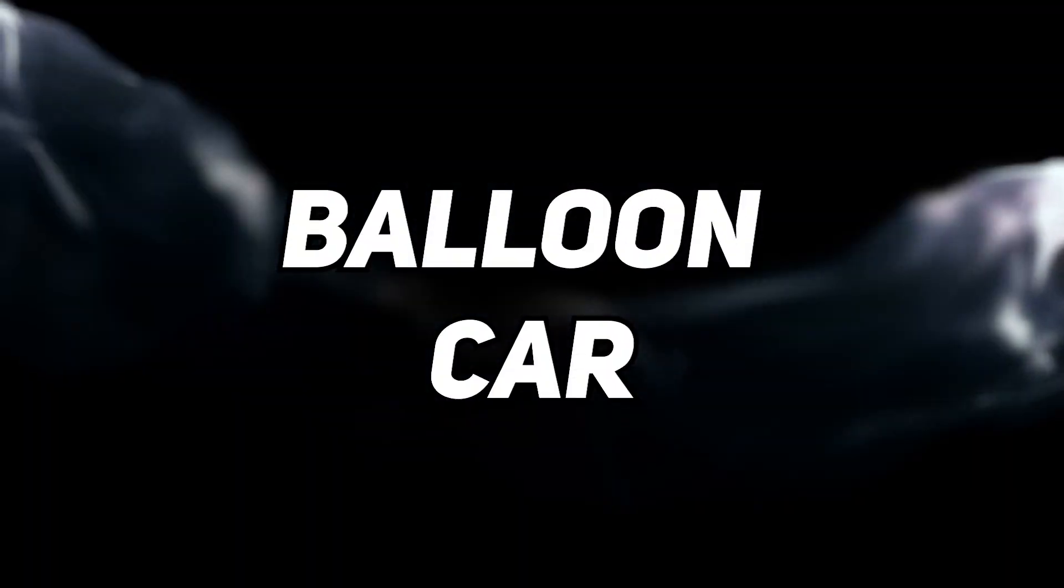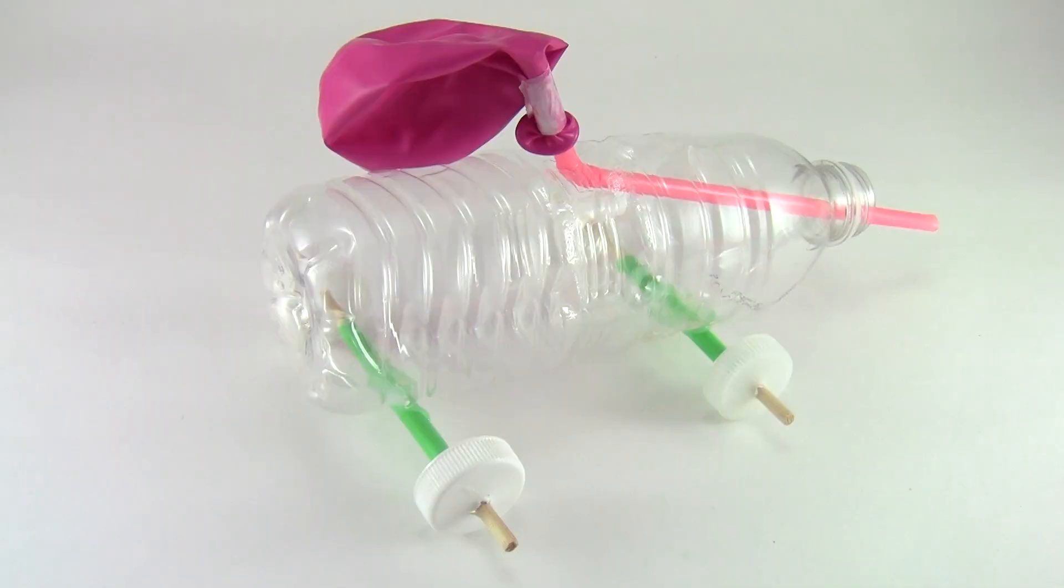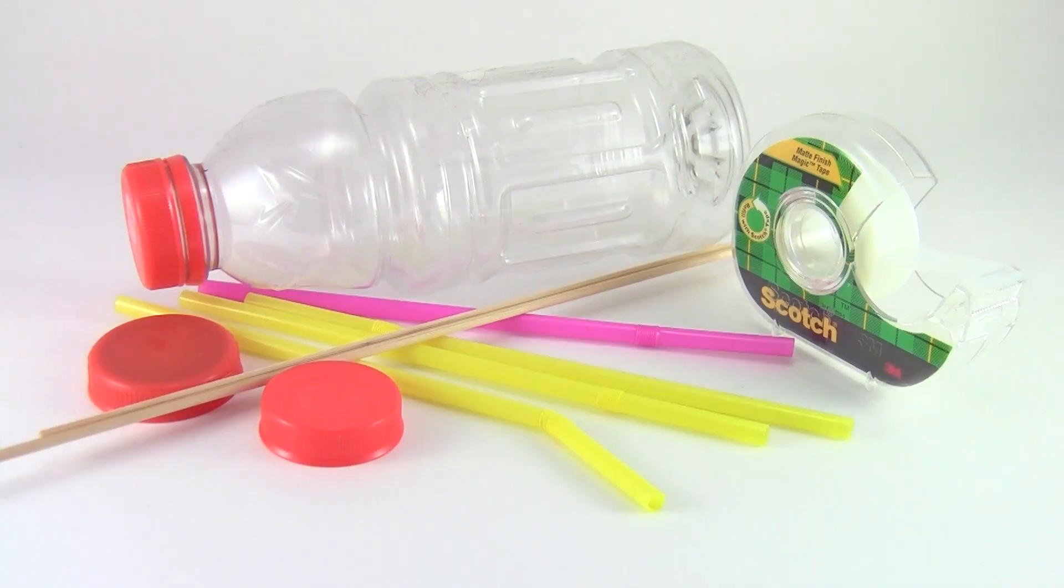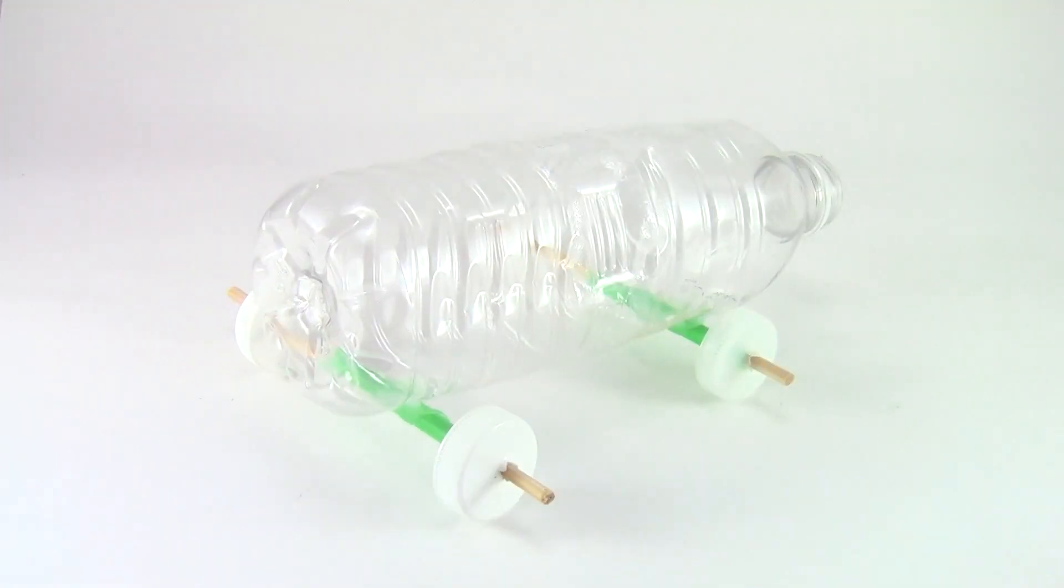Number four: Balloon Car. The fourth project is a Balloon Car which is a robot that can move using air pressure. You can make a Balloon Car from a cardboard box, four bottle caps, two straws, a balloon and a rubber band.